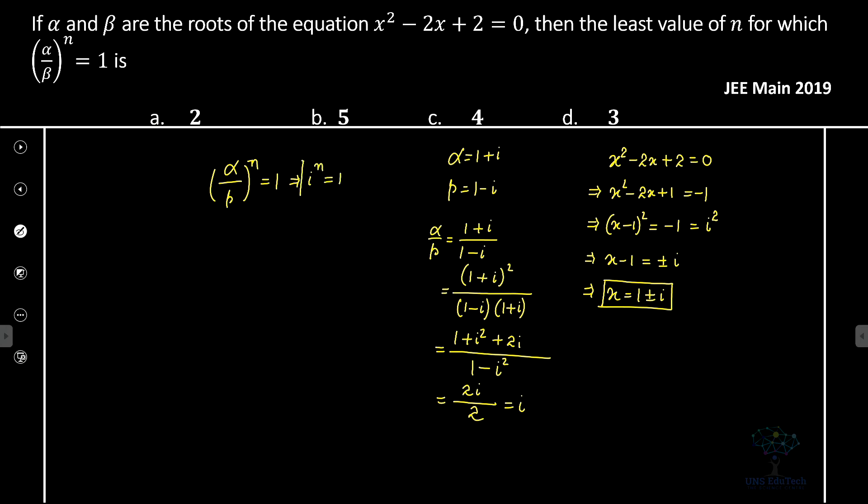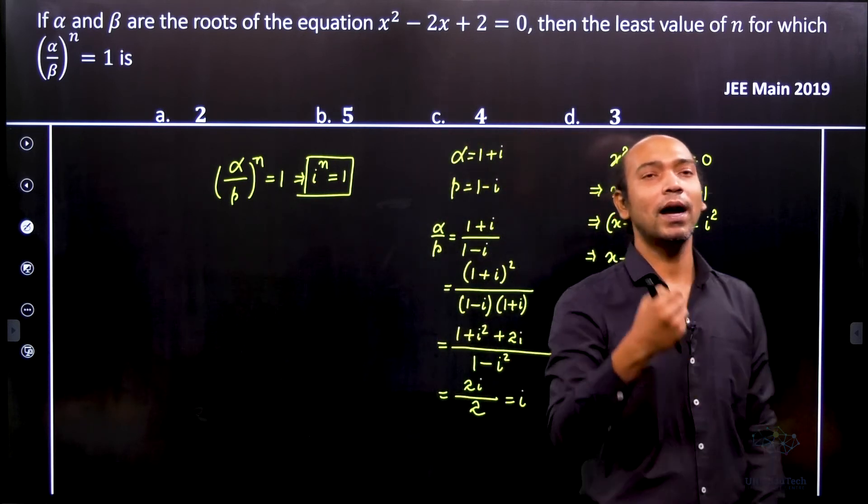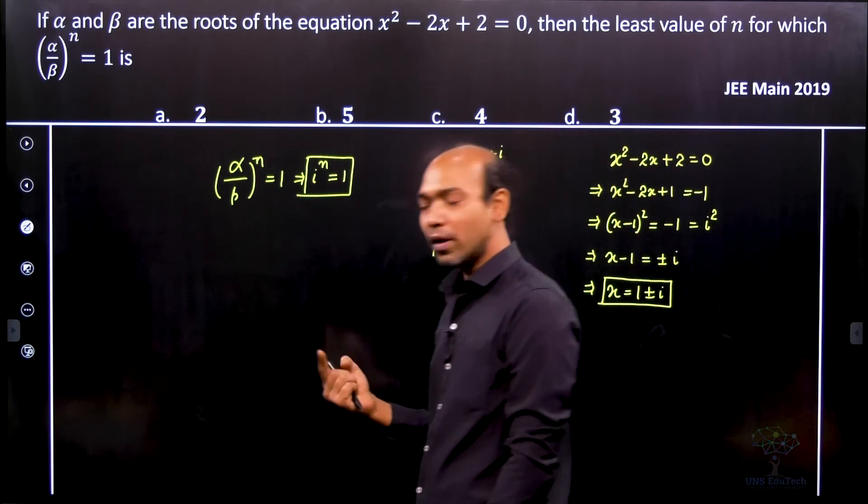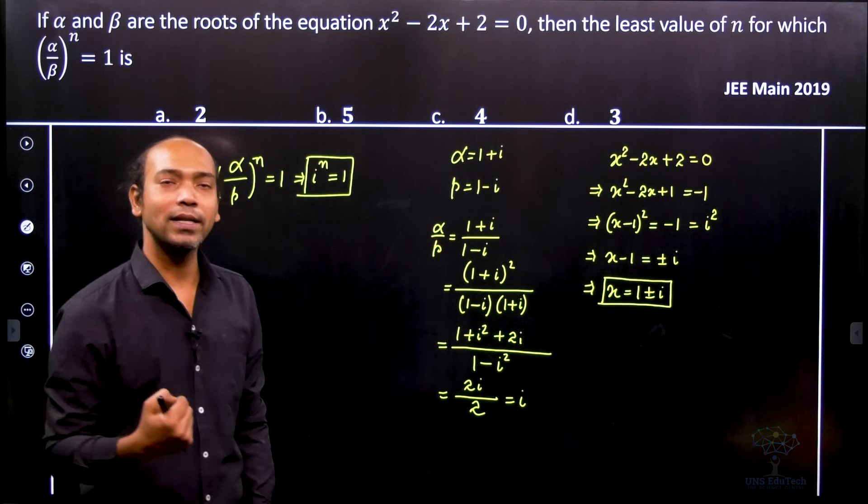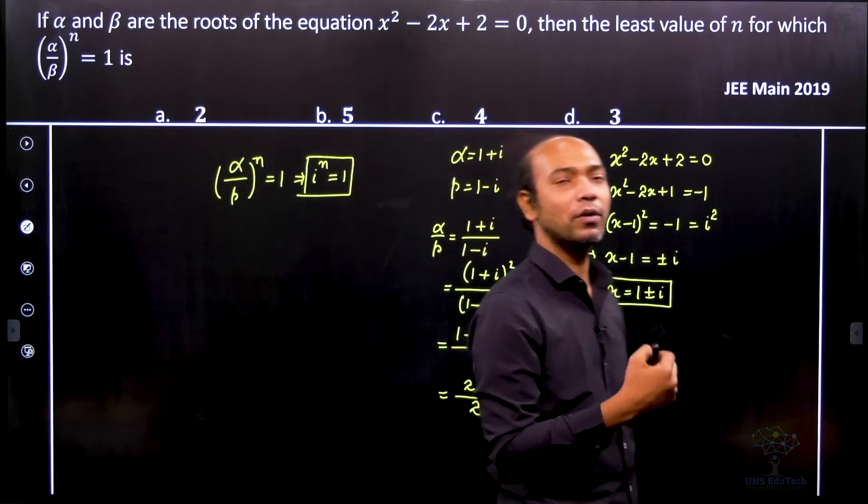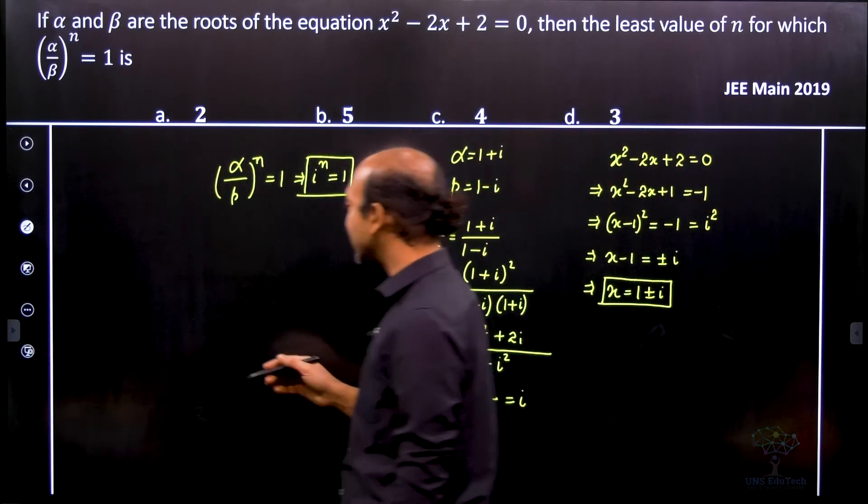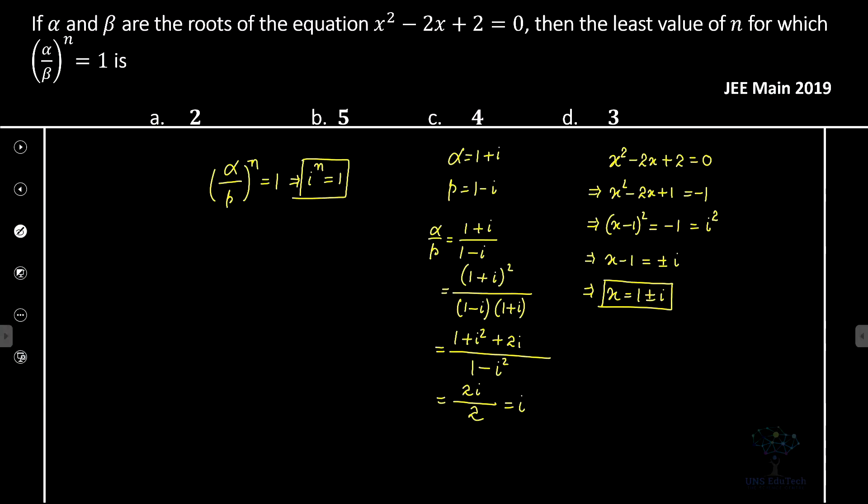When do we first get 1? i¹ = i, i² = -1, i³ = -i, i⁴ = 1. So the least value of n for which this relation holds is 4.